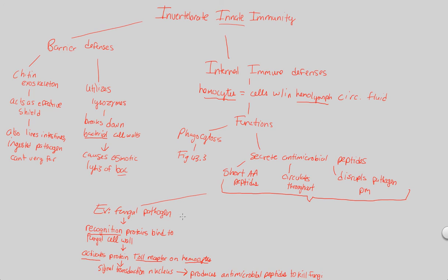Notice the stepwise arrangement: recognize, activate, destroy. Much of the immune system acts in this same way. This Toll receptor was discovered around 1996 by Hoffman, who won a Nobel Prize for this discovery in 2011. It's a big idea in immunity.